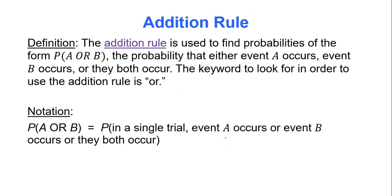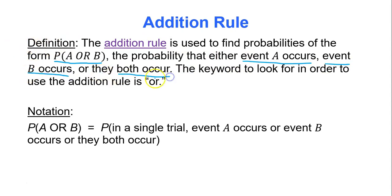The addition rule is used to find probabilities of the form: the probability of event A occurring or event B occurring. This means the probability that event A occurs, event B occurs, or they both occur.